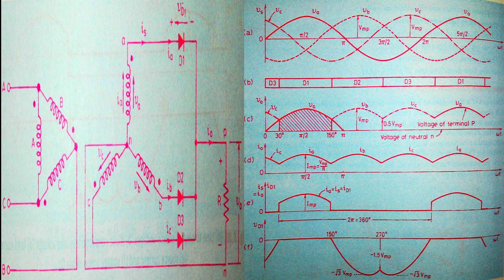With voltage VA at point P, looking at diode D2: its anode has voltage VB while its cathode has voltage VA. Since VA is greater than VB, the cathode of D2 is more positive than its anode, so D2 goes into reverse bias. The same logic applies to diode D3 — it also goes into reverse bias.